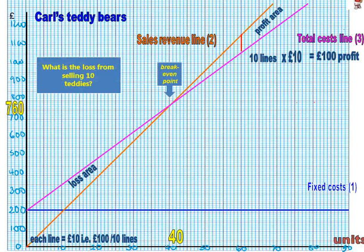You can do the same for the losses. If you sell 10 teddy bears, what's below the breakeven point — so we know it's a loss — draw the same line, ignore the fixed cost line, and there'll be 50 lines, times £10, giving you a loss of £150. And that's essentially how you draw a breakeven chart.